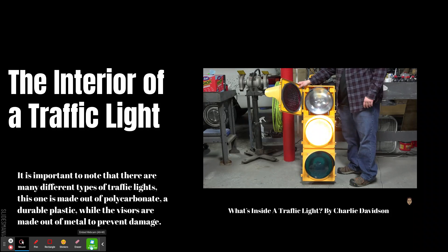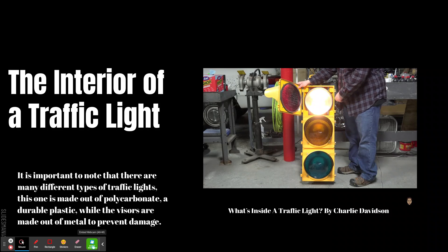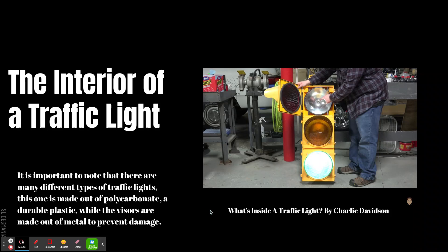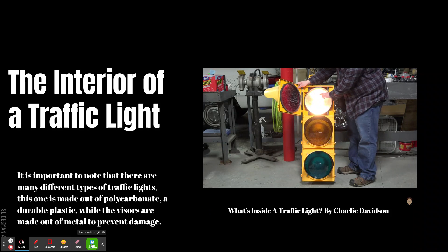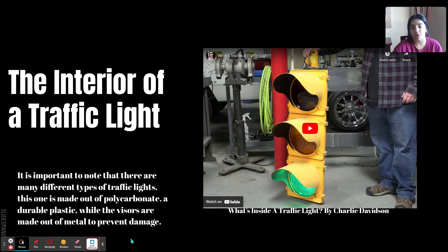They also make metal signals, which stand up much better to weather and any kind of impact. The bulb this one uses is just a 67-watt traffic signal bulb — they make a bulb specifically for these. That is a polycarbonate traffic light; there are different types of materials, but this one happens to be made out of polycarbonate.